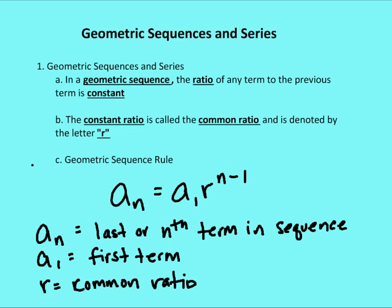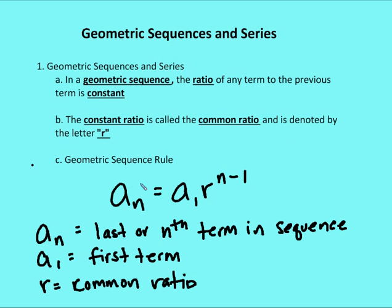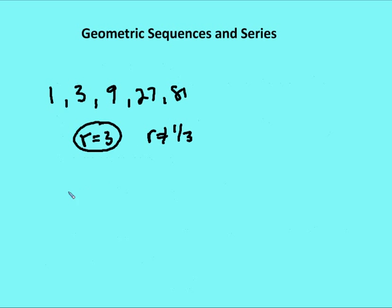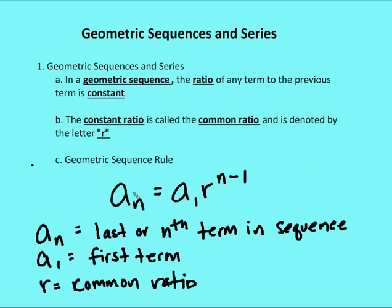The geometric sequence rule — remember the sequence is just the terms one, three, nine, 27, 81 in order — is: a sub n equals a sub one times R to the power of n minus one, where a sub n is the nth term, a sub one is the first term, and R is the common ratio of a term to the preceding term. For this case, a sub n equals one times three to the n minus one, or simply a sub n equals three to the n minus one.